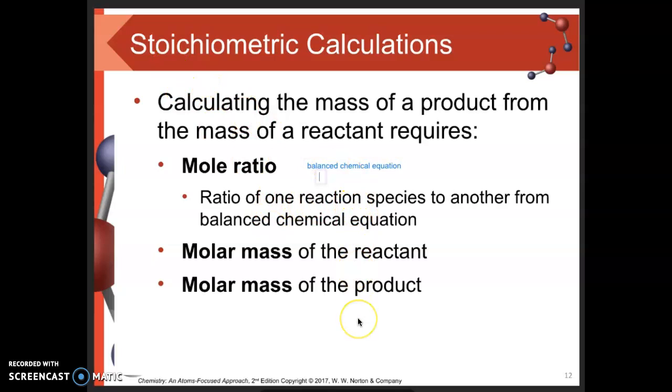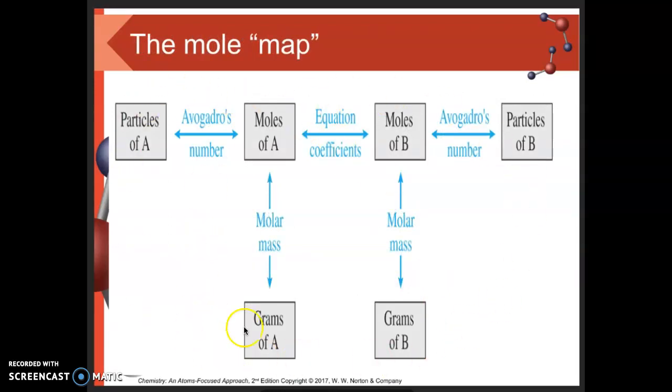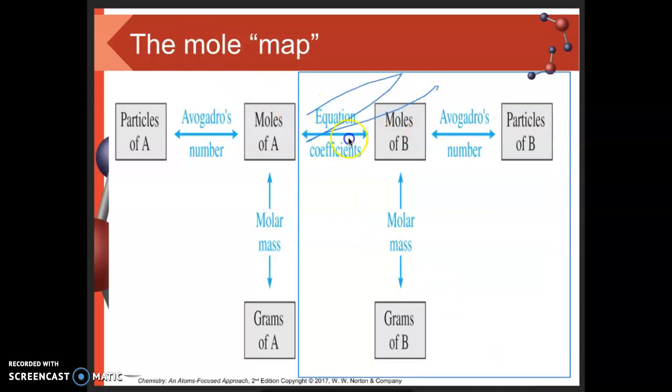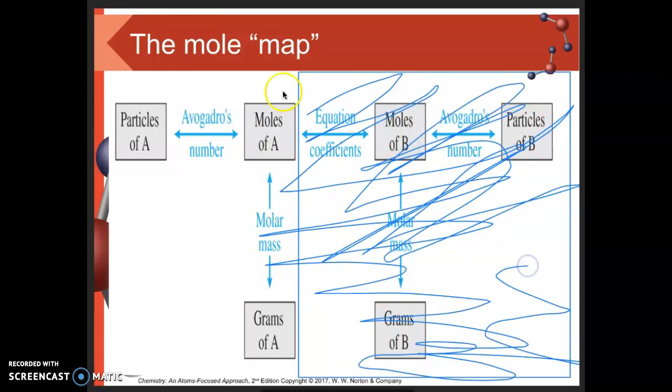If we know the balanced chemical equation, we can figure out the mole ratio. This map concept should look familiar from our second unit, where we looked at really just half of this map. We were interested in going between grams of a substance and moles of a substance, moles and particles, and particles to grams if we went through moles first. We did all of that in chapter 2 when we introduced the mole concept and empirical formulas.